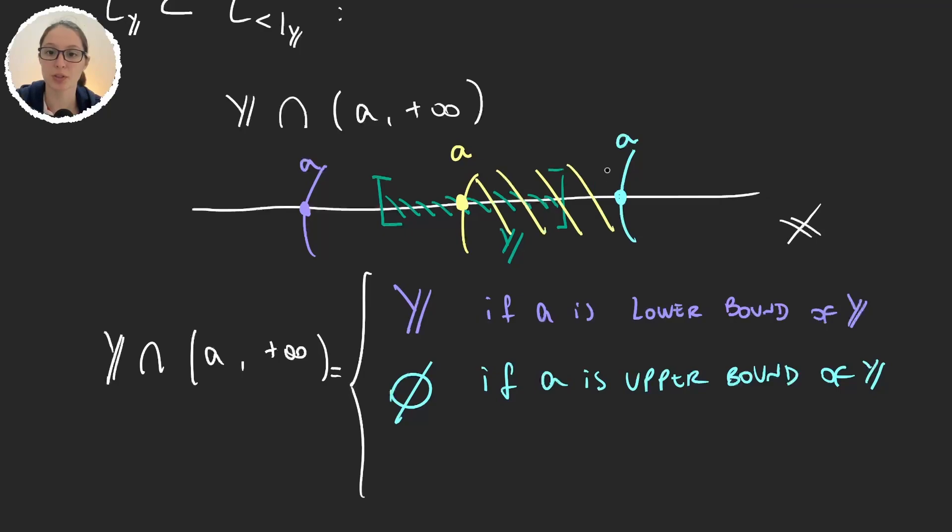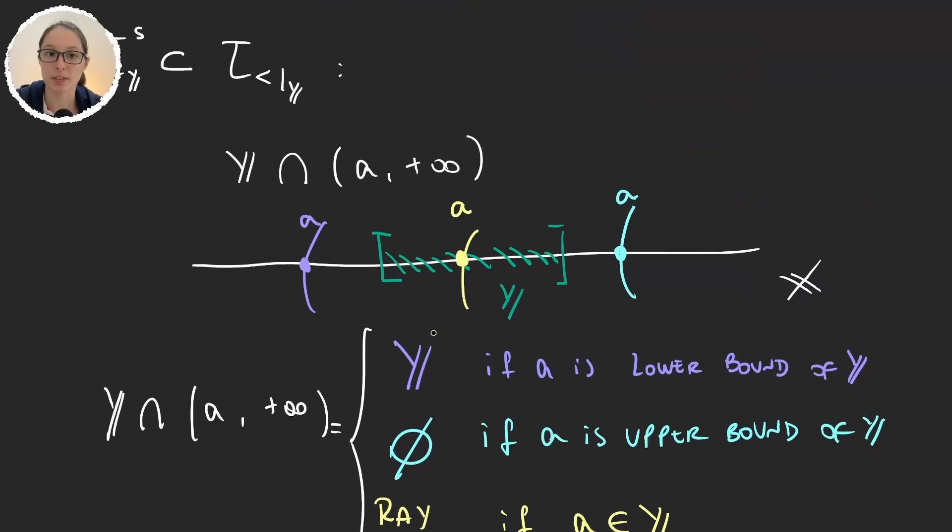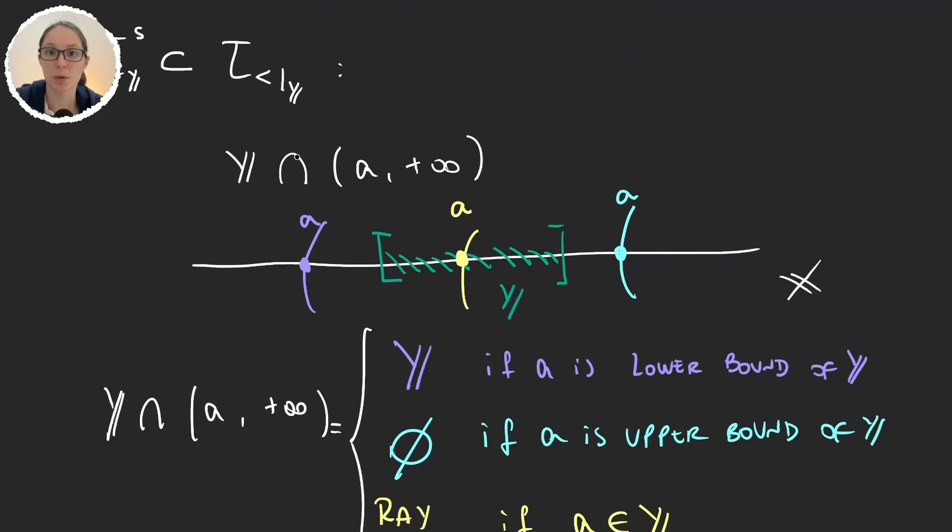And finally, in this other situation, the intersection would be A and the end of Y, if Y is a bounded set. So, this is a ray in Y. But now, all of these elements, the set itself, the empty set, and the rays, these are all elements in the ordered topology of Y.